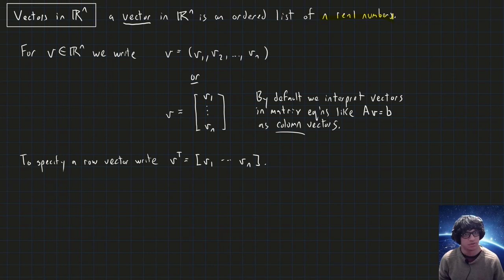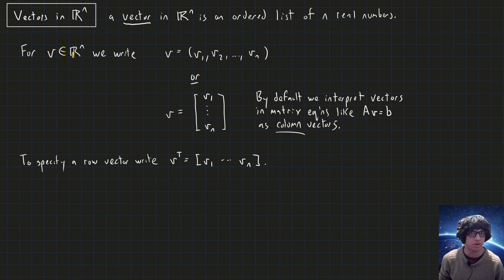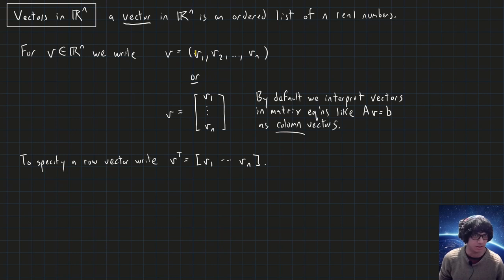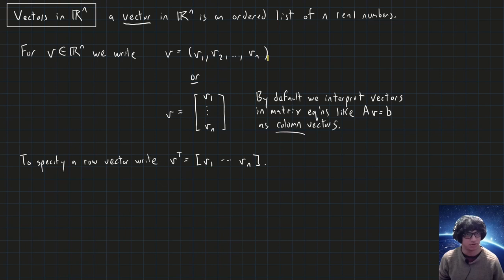There are two main ways we can write this down. Let's say that V is our vector in Rn. The symbol here in the middle means that V is a member of the vector space Rn. We can write it as an ordered list of numbers: V1 is the first real number, V2 is the second real number, and so on up to Vn.